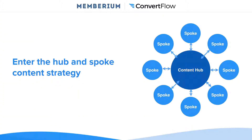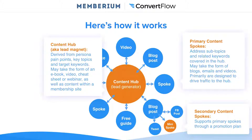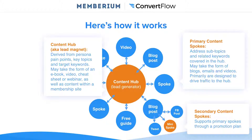You need a holistic strategy that encourages repeat content consumption and engagement and gets people to move from one stage of your buying process to the next until they're eventually in your membership site or they're paying customers. So enter the hub and spoke content strategy. The hub and spoke model can help you spread your top-notch content across the web and generate a lot more leads into the top of your marketing funnel. First you create a content hub — which could be a lead magnet or content within your membership site — typically derived from your persona's pain points. The content hub is typically the premium content that you would deliver to them that would help them solve their problems or educate them on how to do so. Your content hubs can be in the form of an ebook, a video, a cheat sheet, or a webinar.